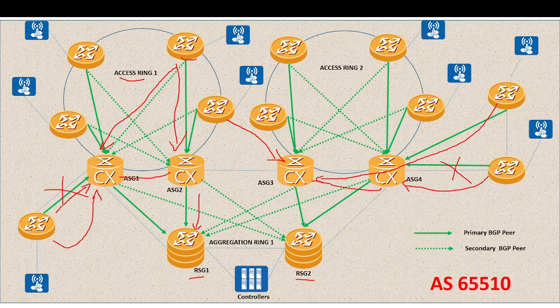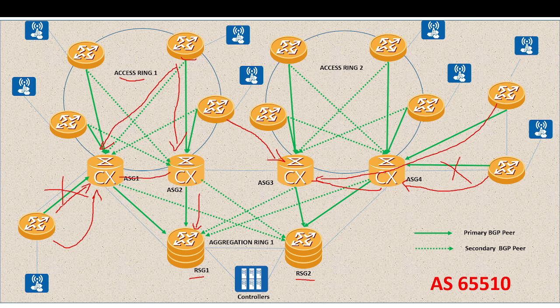We can also use BGP dynamic groups. With proper IP address planning — for example, if access ring one uses a known IP prefix — we don't need to make BGP configuration changes on SGs every time we integrate a new CSG. By defining dynamic groups on the SGs, we only need to configure the new CSG and the peering session comes up dynamically on the SG. This technique minimizes the number of configuration changes on SGs and RSGs, depending on how well-defined your subnets are.